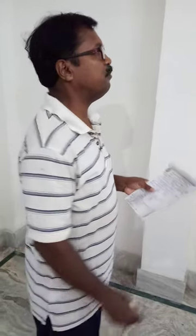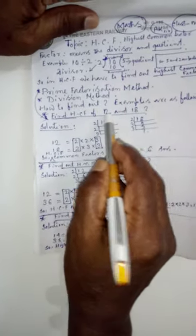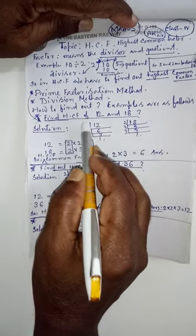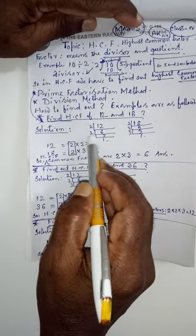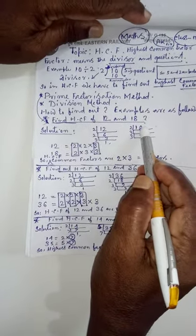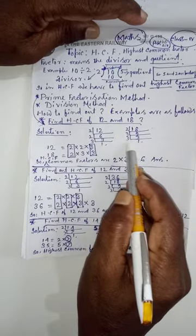First, prime factorization method. Find out the HCF of 12 and 18. For 12, we have written it separately and found the factors: 2, 2, 3. Same way for 18, we have written it separately and found out the factors.